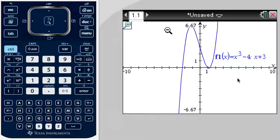So once again, here is our function that we've previously graphed. And now we're going to graph another function and find their intercepts.